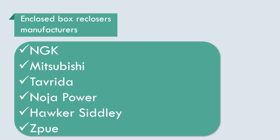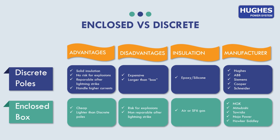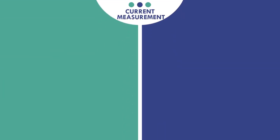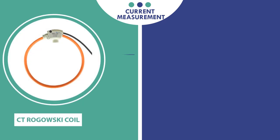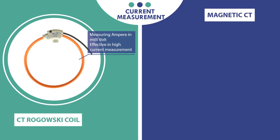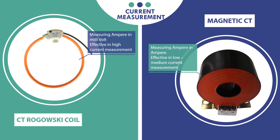Let's move to the second important factor when choosing a right recloser: current measurement device. Here we have two types. Rogowski coil current transformer which measures ampere in millivolt and is effective in very high current measurement. And magnetic current transformer which measures ampere in ampere and is effective in low and medium current measurement.